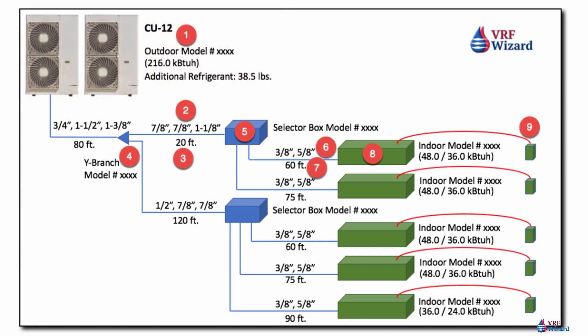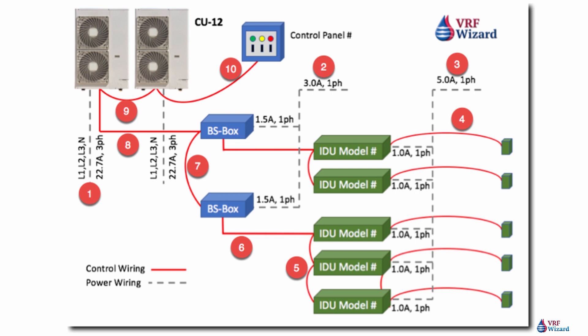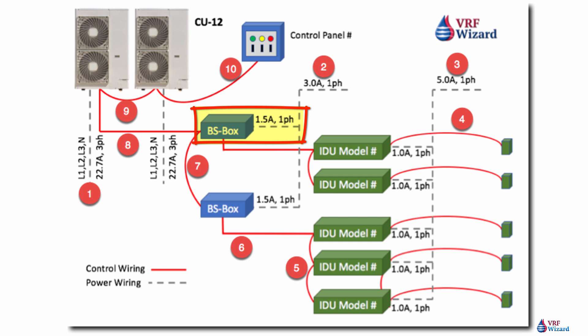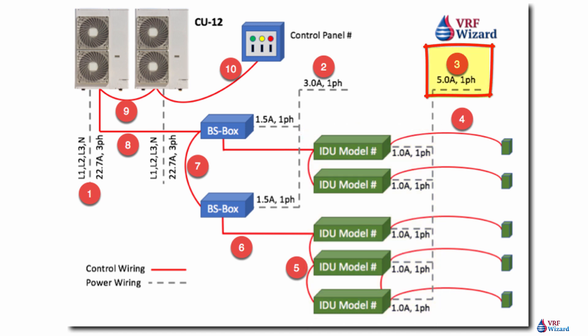You'll also have a VRF wiring diagram that will be automatically calculated and shown for you. It tells you the amps required — for example, 22.7 amps, three phase. It will tell you the power required to the branch selector box and the amps. It shows the same for the indoor units — for example, one amp single phase — and adds them all up to give you the total load, such as five amps single phase.